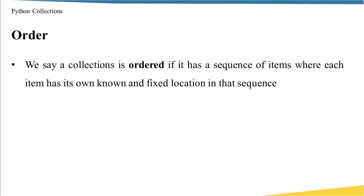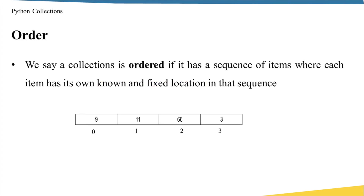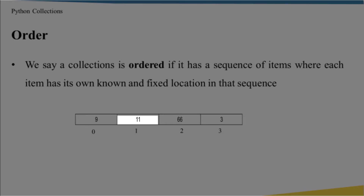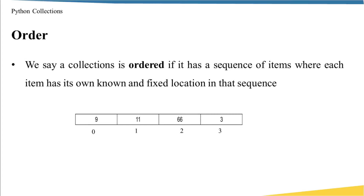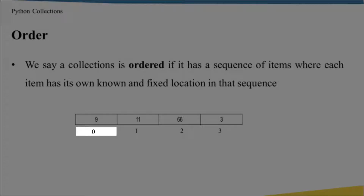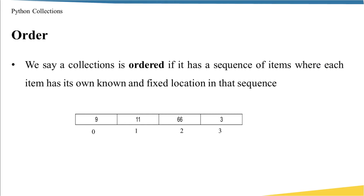Let's start by talking about order, which is the first attribute. We say a collection is ordered if it has a sequence of items where each item has its own known and fixed location in that sequence. For example, assume I have a collection with 9, 11, 66, and 3. Each one of these numbers has an index: the first is 0, the second is 1, and so on. Each item has its own known and fixed location, and if a collection supports these fixed locations, we say it is an ordered collection.